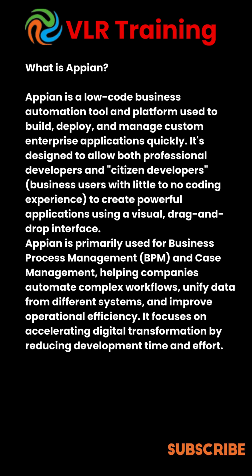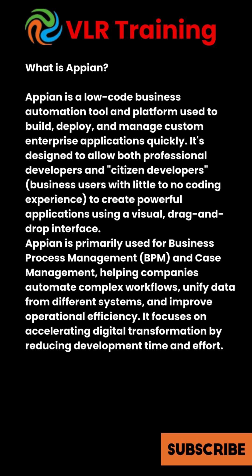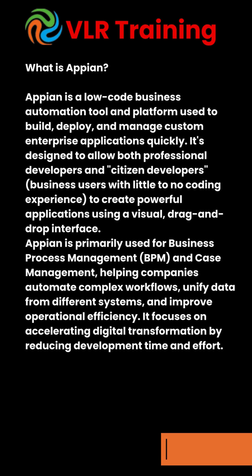Appian is primarily used for business process management (BPM) and case management, helping companies automate complex workflows, unify data from different systems, and improve operational efficiency. It focuses on accelerating digital transformation by reducing development time and effort.